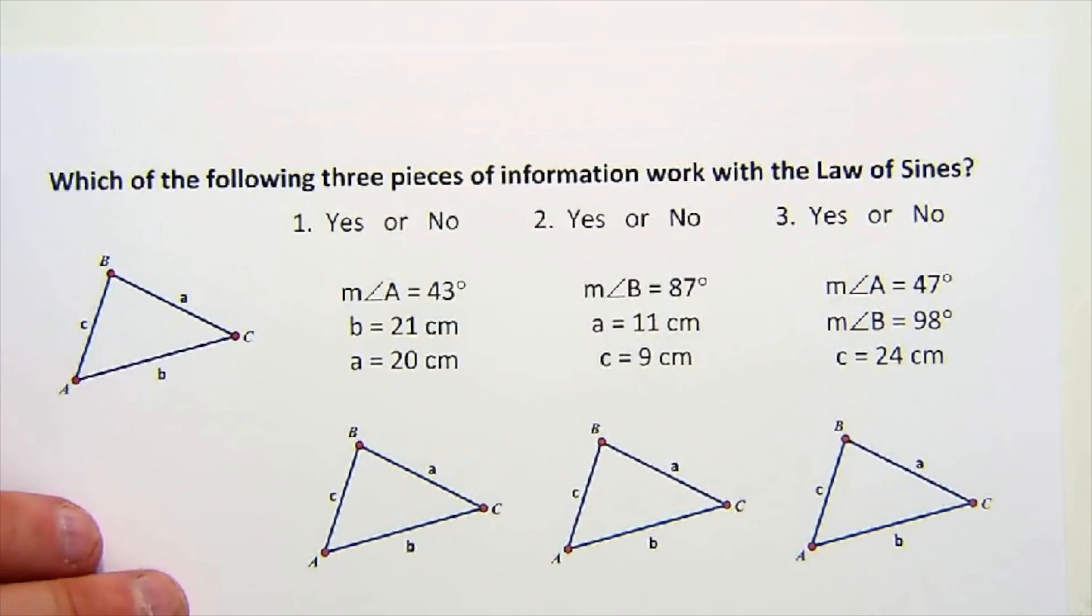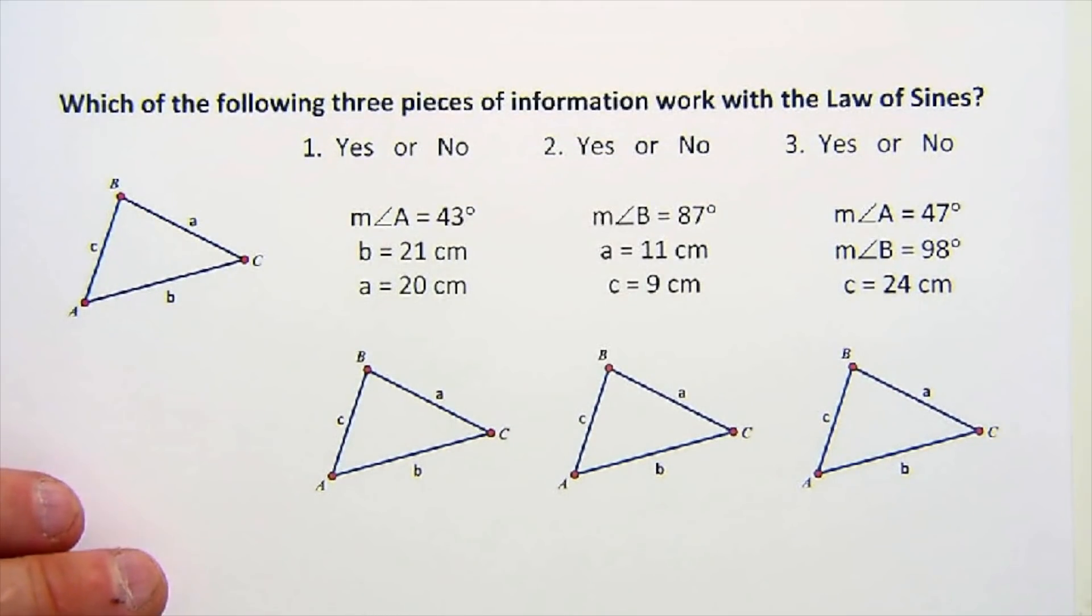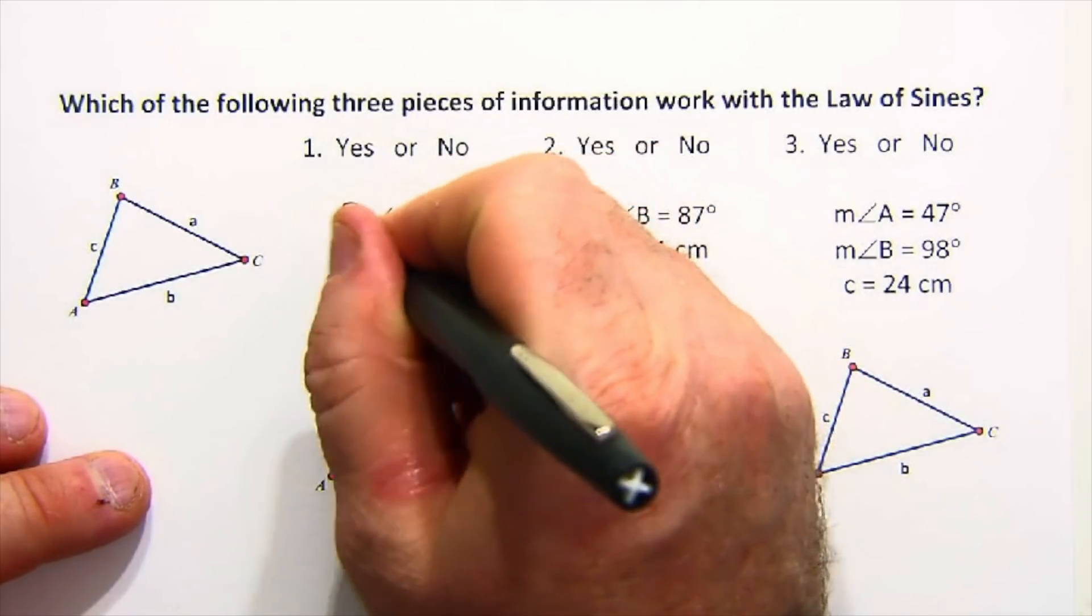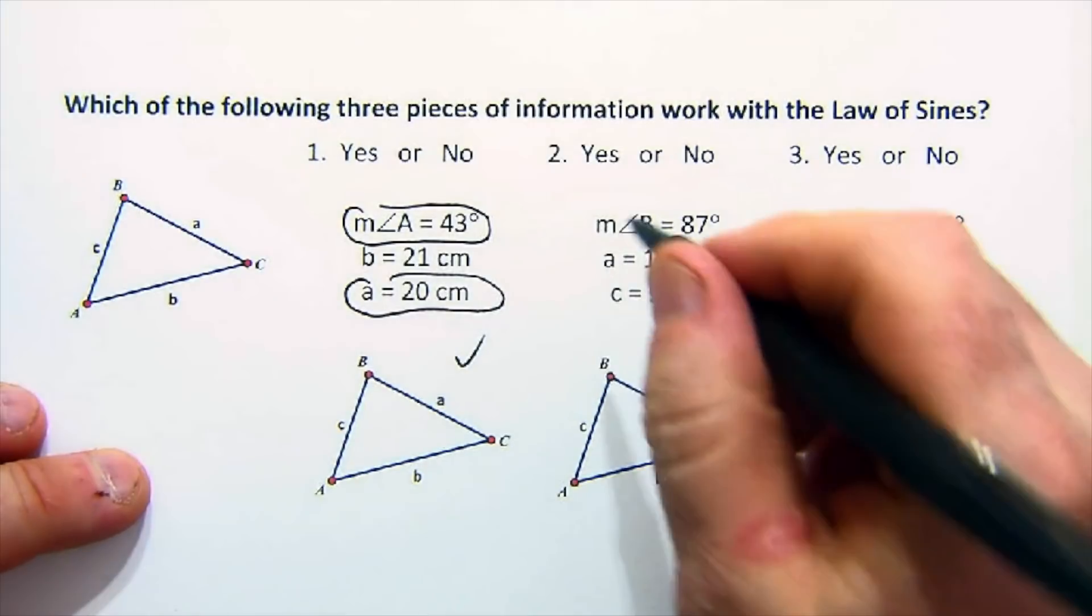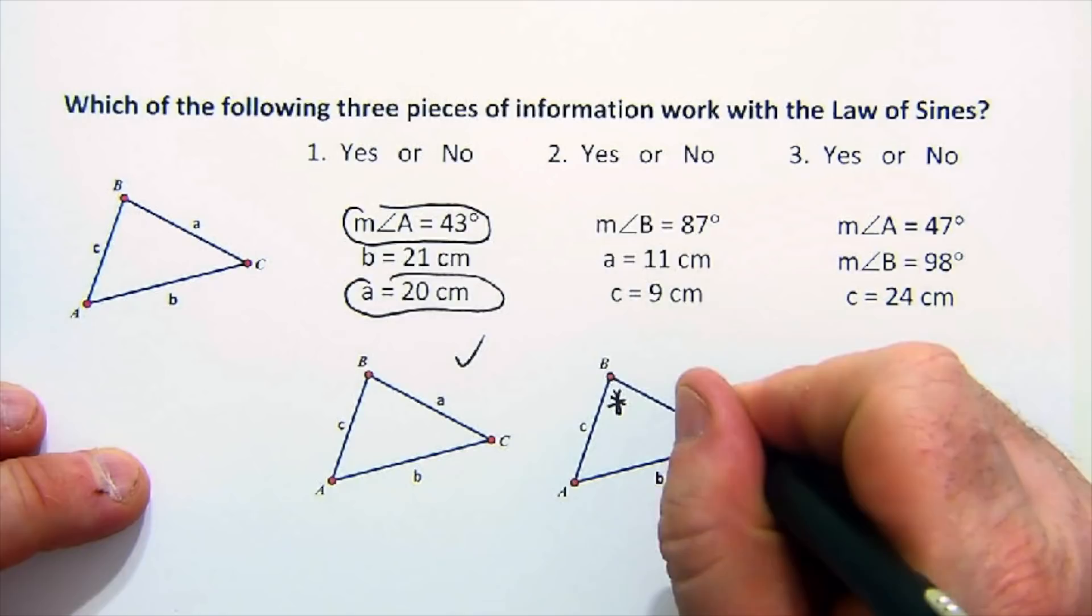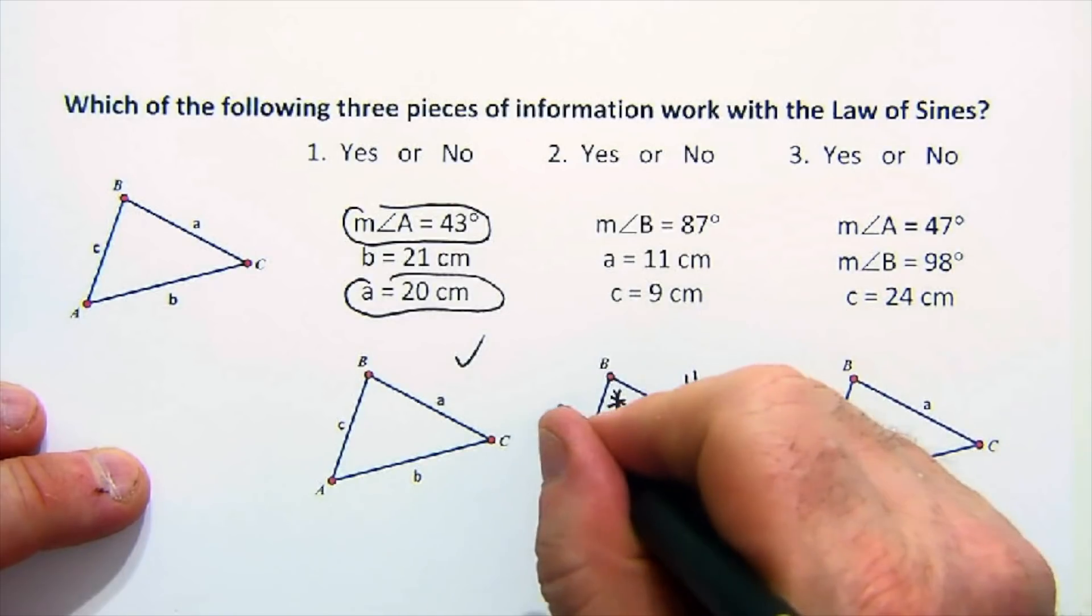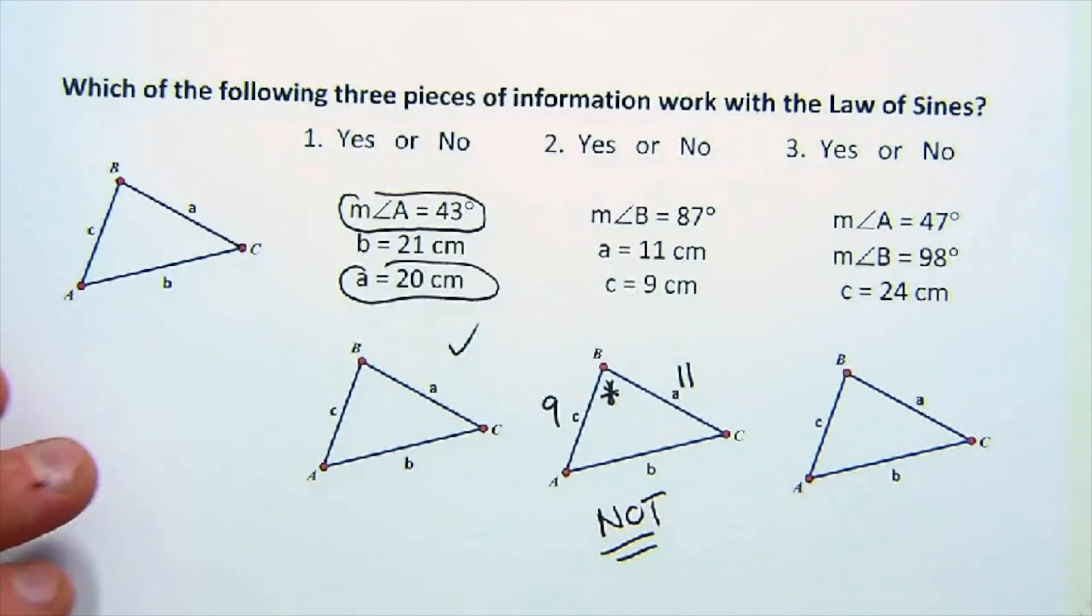Let's look at one more little thing here. A similar idea about which of the following three pieces could work. Same question. I won't do all of these, but immediately I see a and little a. This is going to work. Here's a troubled one. I've got angle B, I've got side A and I've got side C. This one would not work. So ultimately you're looking for that magical pairing.